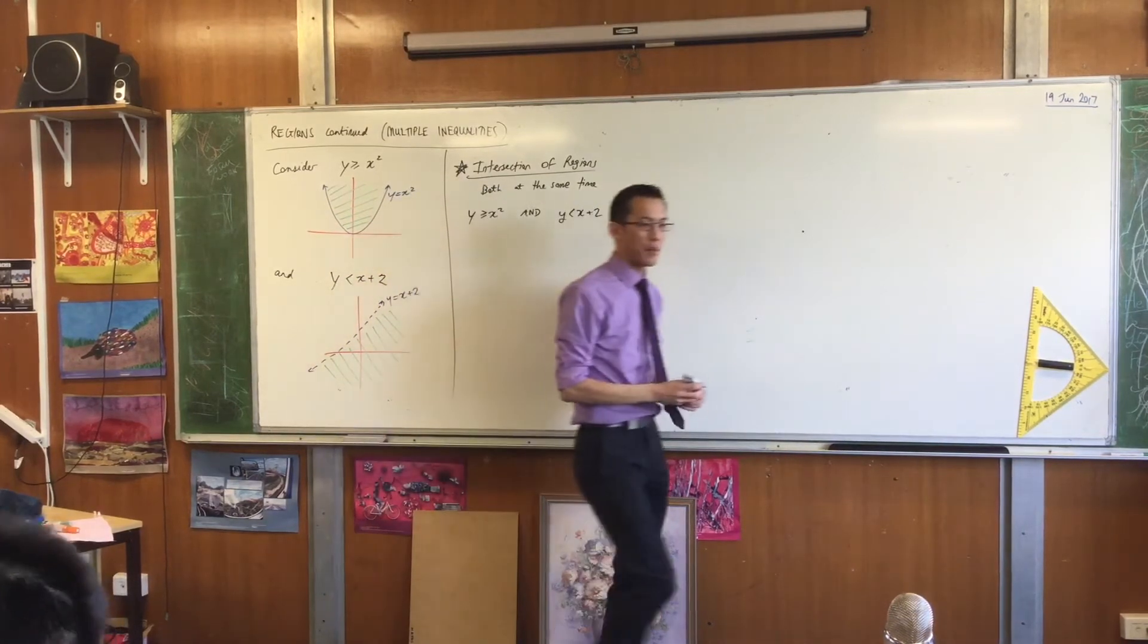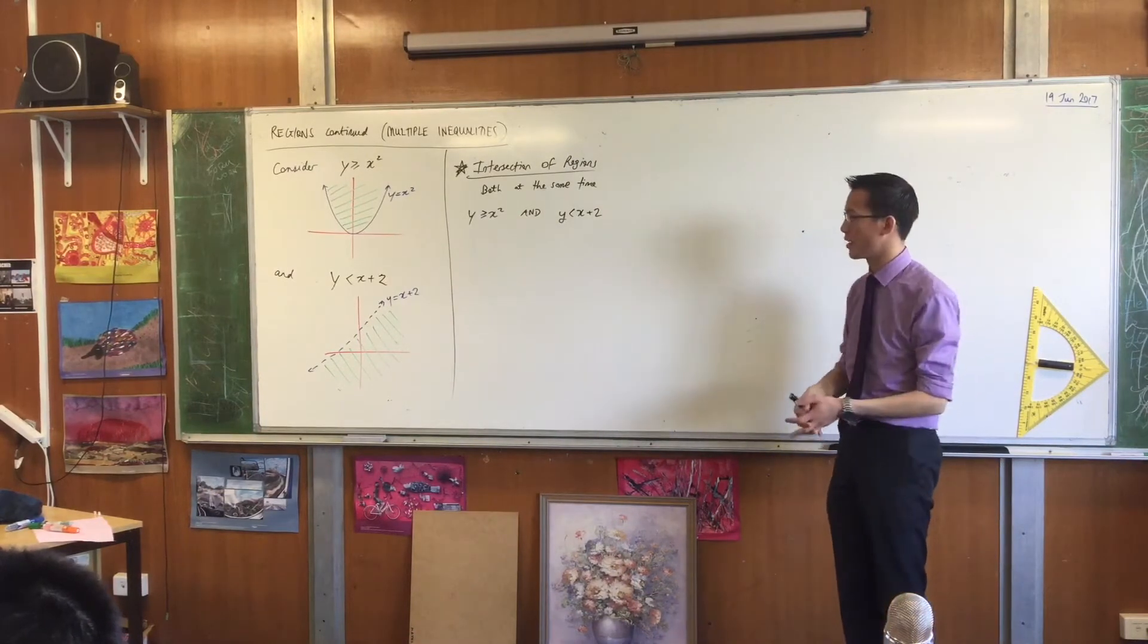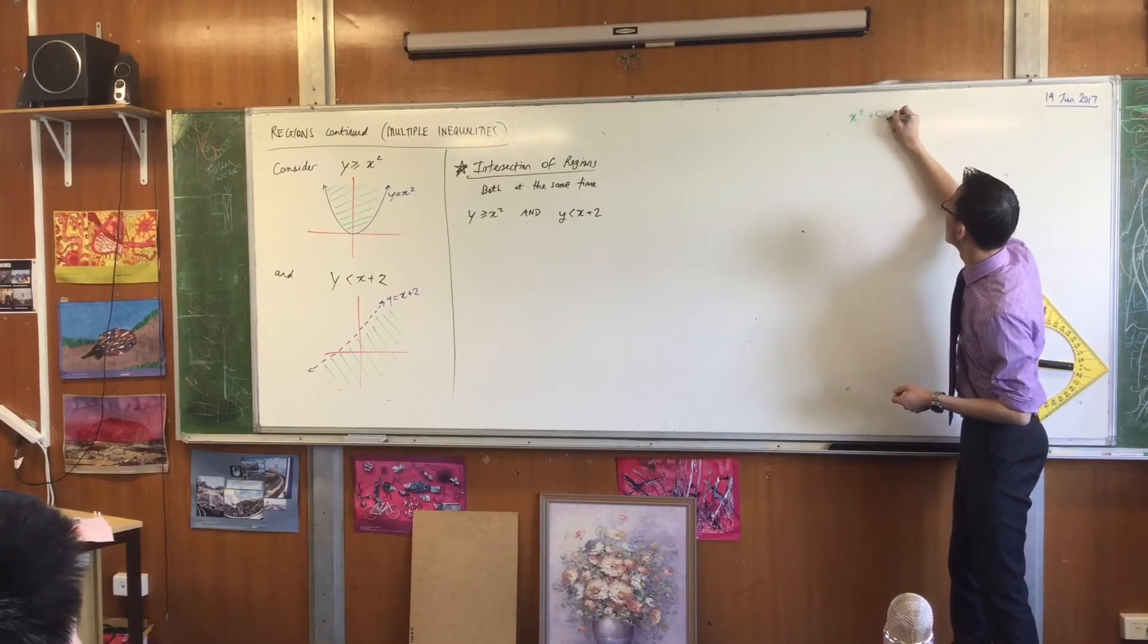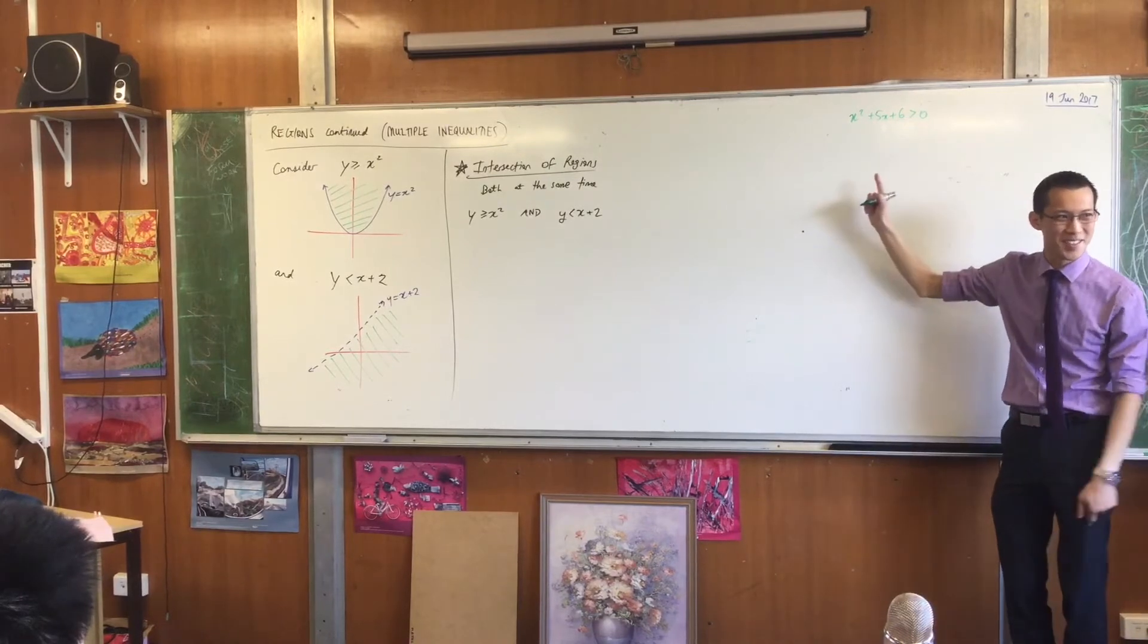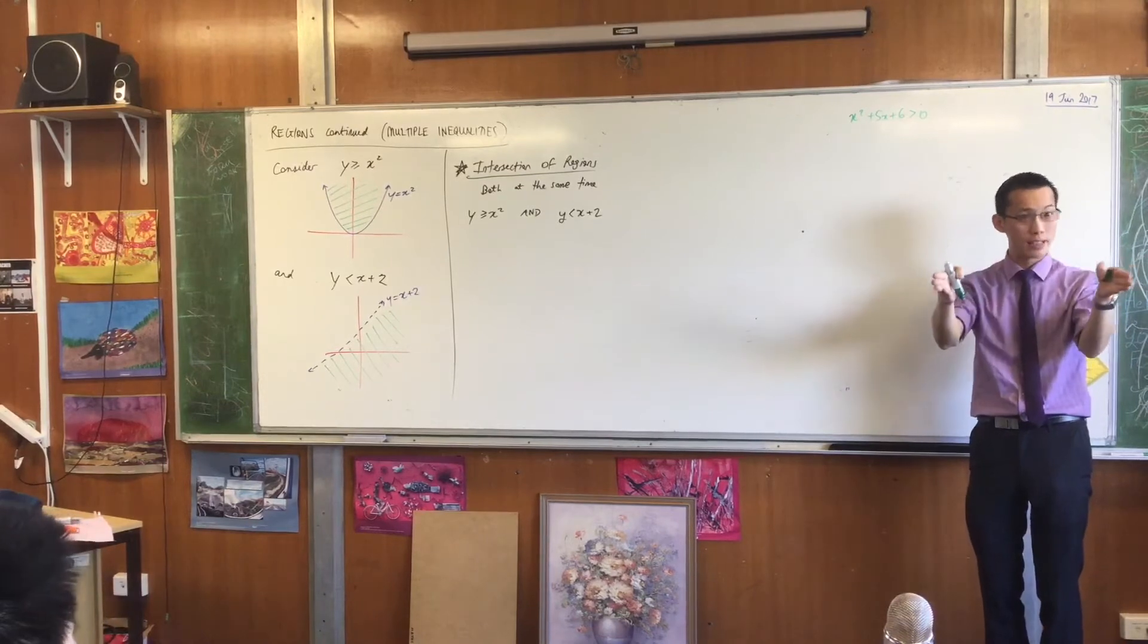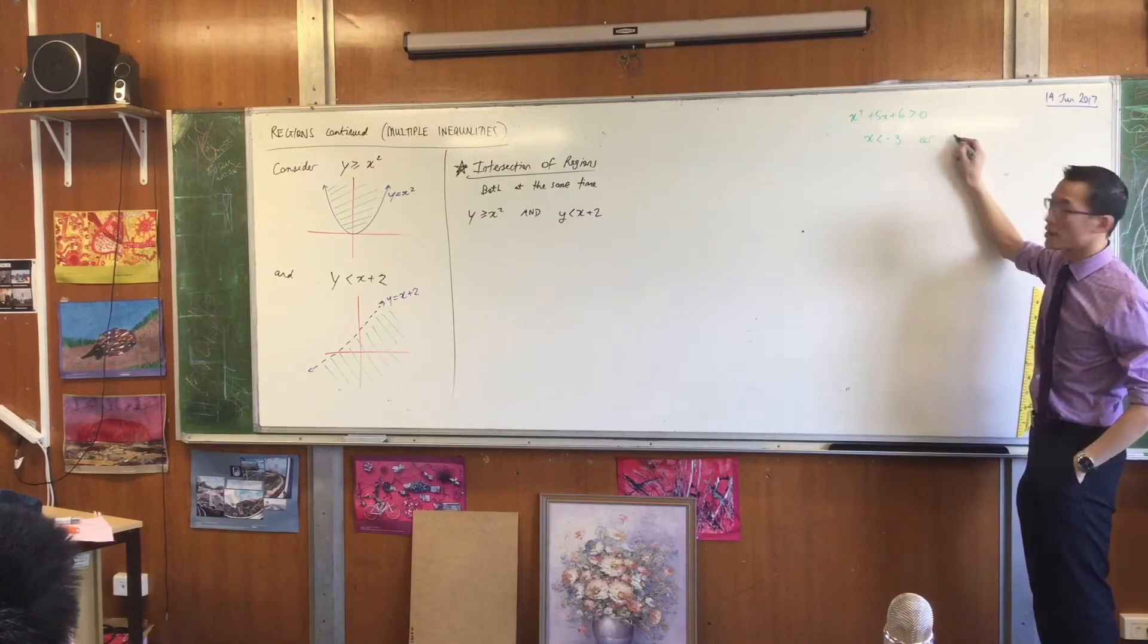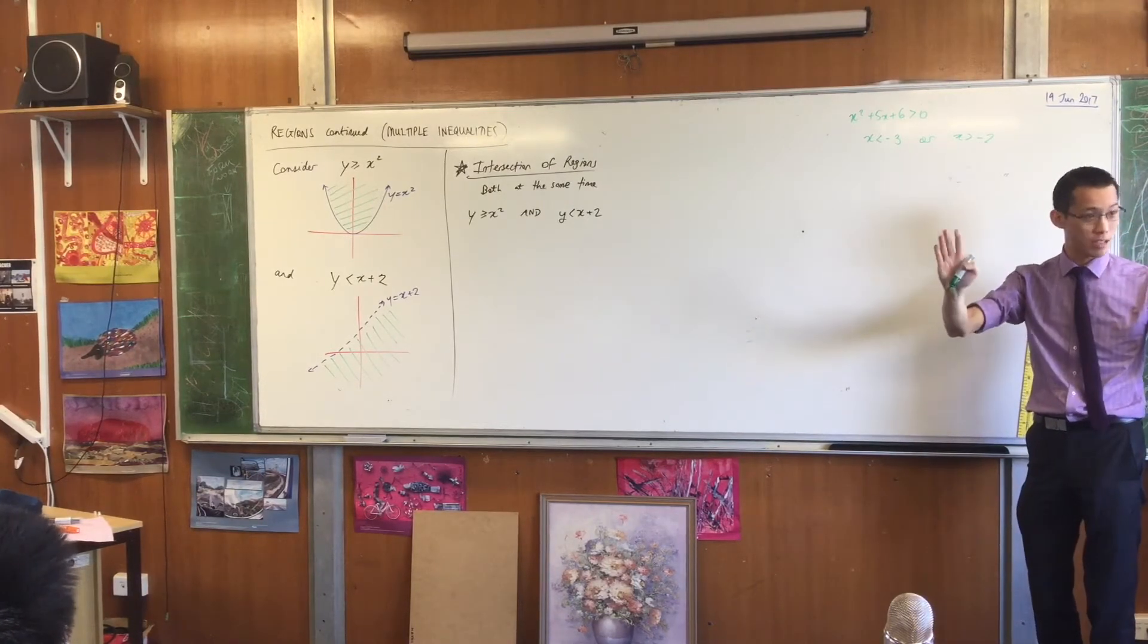Now, do you remember when we're dealing with one-dimensional inequalities, sometimes you would find the answer to something would be lots of different pieces. There would be multiple inequalities. Something like this. If you were solving this guy, because you're so sick of seeing this quadratic, you should be able to see, oh, I know the shape of this. I know where it's going to intersect with the axes. So therefore, x is going to be less than negative three, or it's going to be x is greater than negative two. That's to the left and that's to the right.